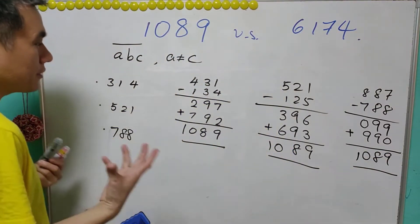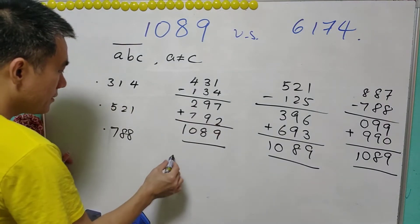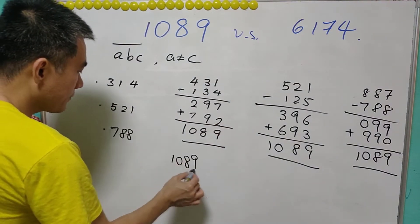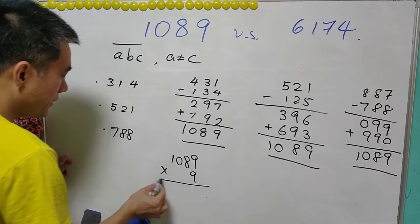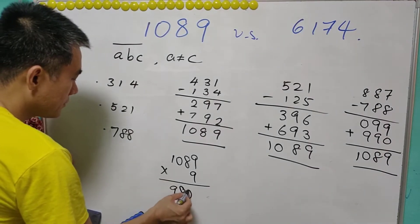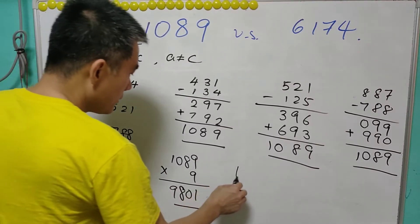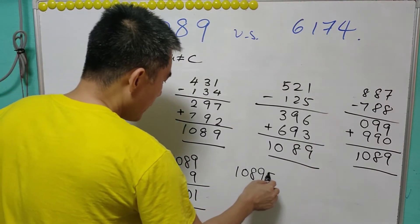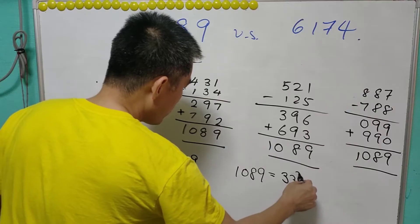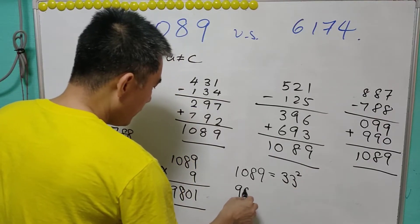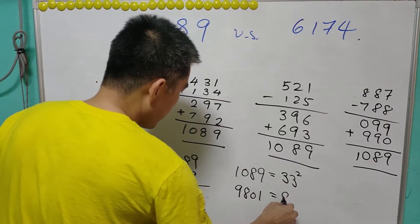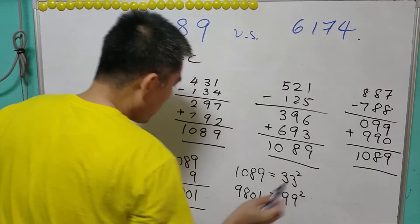And there's another extra thing for this 1089: 1089 times 9 will be equal to 9801, which is the reverse order of 1089. 1089 is actually equal to the square of 33, and 9801 is actually the square of 99.